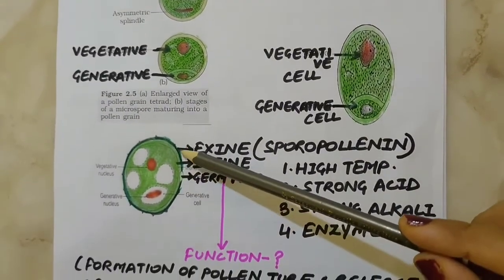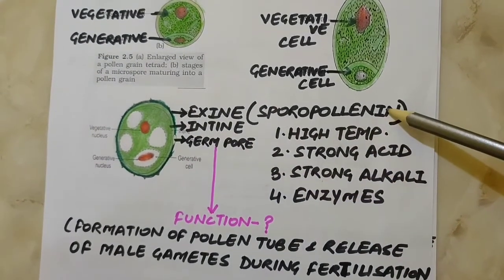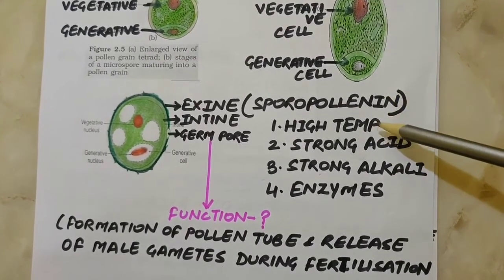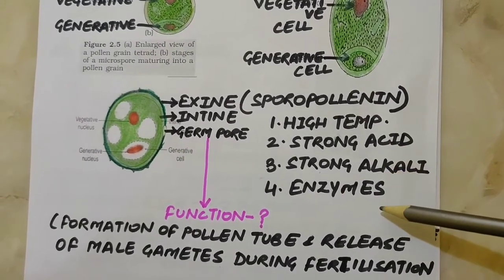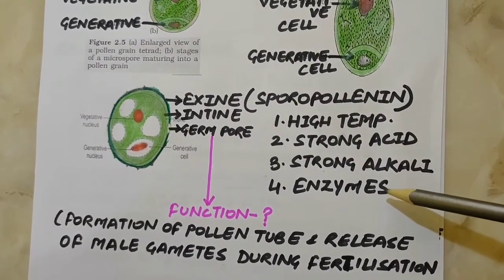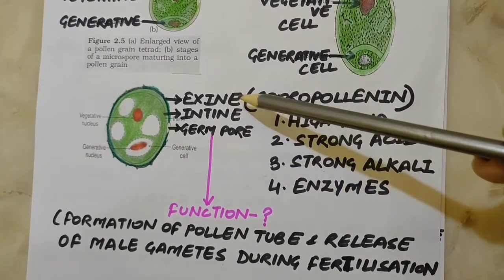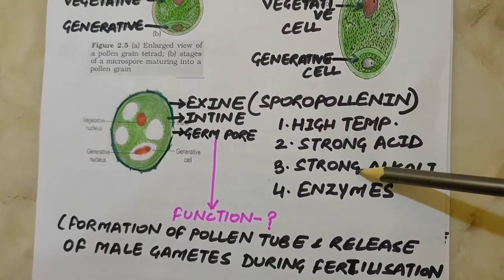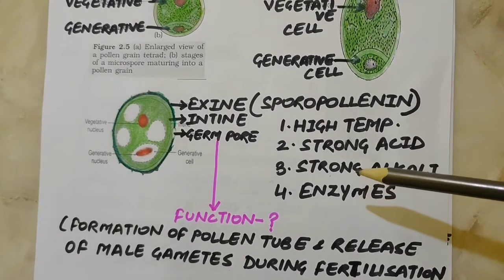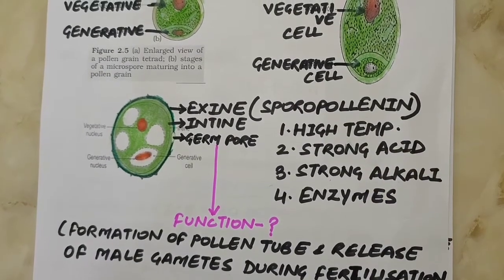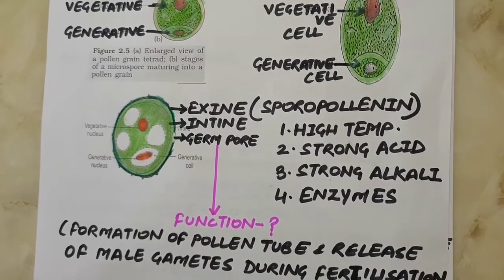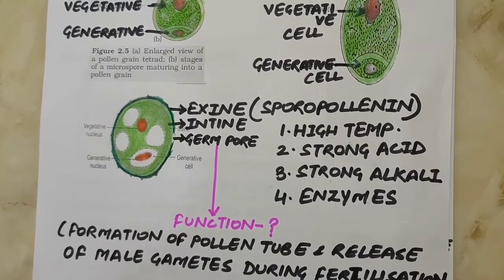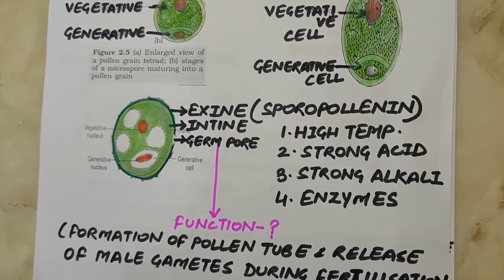Sporopollenin is one of the most resistant organic materials known. It can withstand high temperatures, strong acids and alkalis, and no enzyme that can degrade sporopollenin is so far known. This layer — the exine — is so resistant that pollen grains are well preserved as fossils also. This is because of sporopollenin. The exine should be so hard because it protects the pollen grain from severe or harsh environmental conditions.